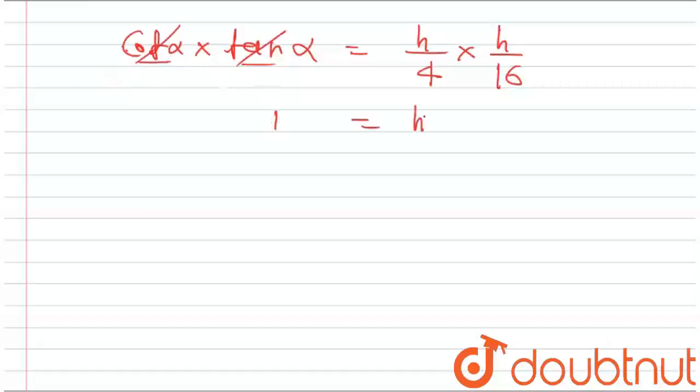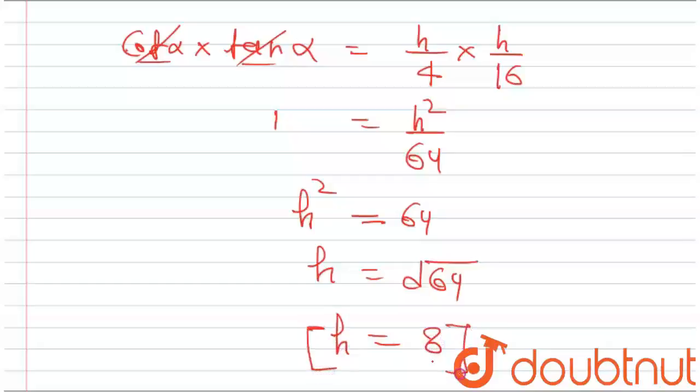This will become h squared upon 64. So h squared will be equal to 64, and in this way, h will be equal to the square root of 64, and that will be equal to 8. So 8 meters is the height.